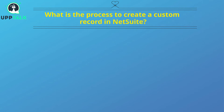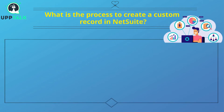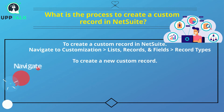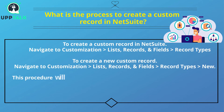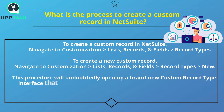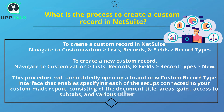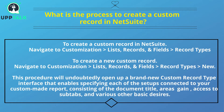What is the process to create a custom record in NetSuite? To create a custom record in NetSuite, navigate to Customization, Lists, Records, and Fields, then Record Types. To create a new custom record, navigate to Customization, Lists, Records, and Fields, Record Types, then New. This will open a new custom record type interface that enables specifying all the settings connected to your custom record, including the document title, fields, access sub-tabs, and other general preferences.